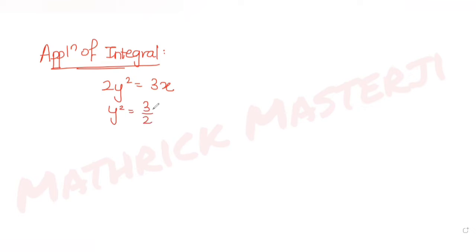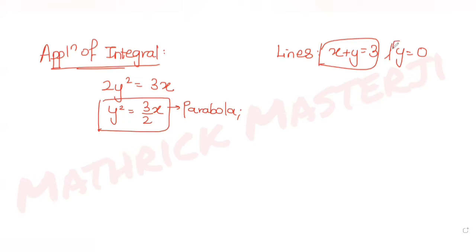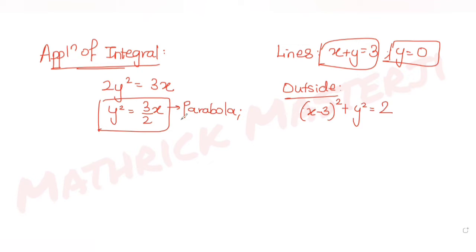The curve 2y² = 3x is essentially y² = (3/2)x, which is a parabola. The other given curves are the line x + y = 3, the line y = 0, and we must find the area outside the circle (x − 3)² + y² = 2. The bounded area is called a.